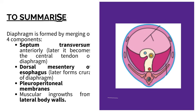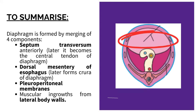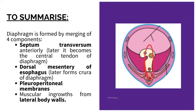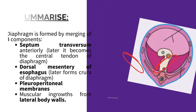To summarize, the diaphragm is formed by the merging of four components: septum transversum anteriorly, which later becomes the central tendon of the diaphragm; dorsal mesenteria esophagus, which later forms the crura of the diaphragm; pleuroperitoneal membranes; and muscular ingrowths from the lateral body walls.